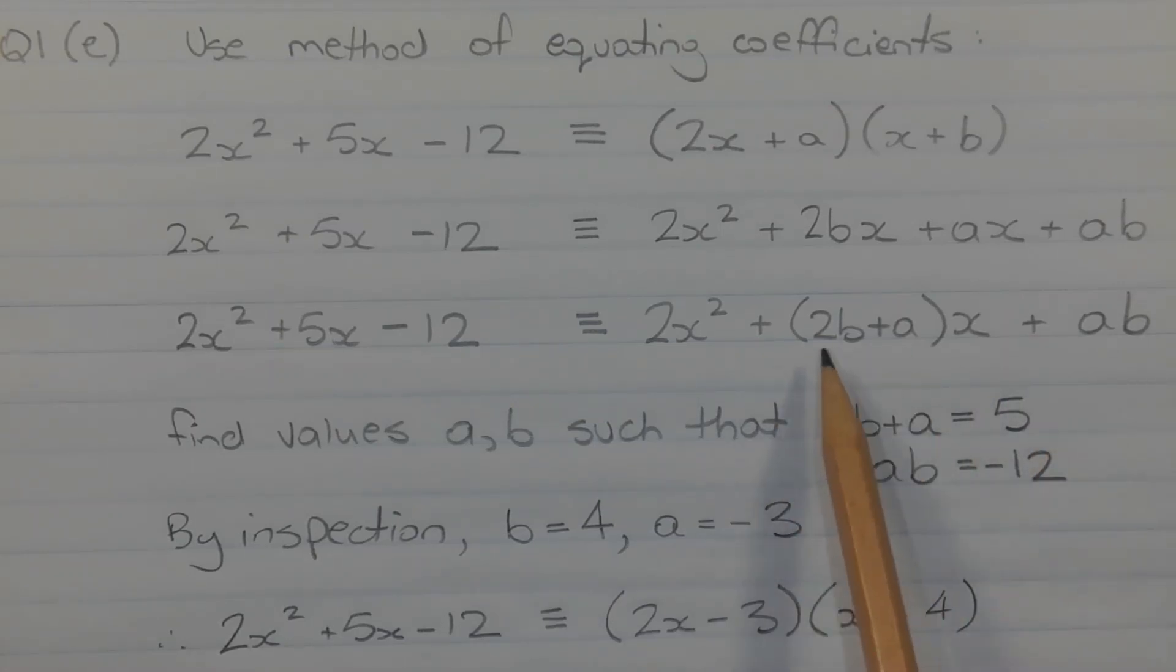Now 2b plus a is the coefficient of x, and that corresponds to the coefficient of x on the left hand side. So 2b plus a should equal 5, and ab corresponds to the value of the constant term negative 12.